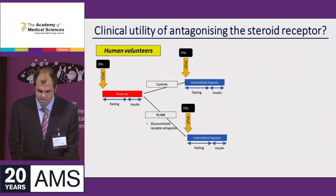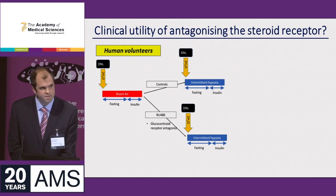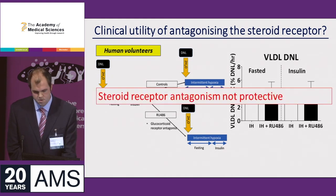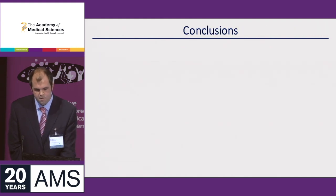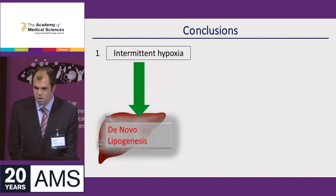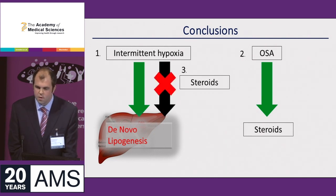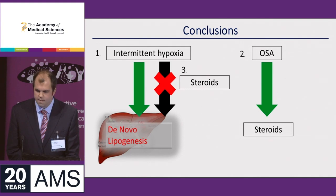Following on from that, we took this into our human study and looked to antagonize the glucocorticoid receptor with the steroid receptor antagonist RU486. Unfortunately, we saw no metabolic protection whatsoever. So even though steroid levels are increased in patients with obstructive sleep apnea, when we tried blocking that receptor in our human experimental model, we saw no metabolic protection.